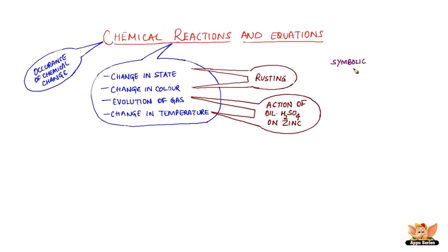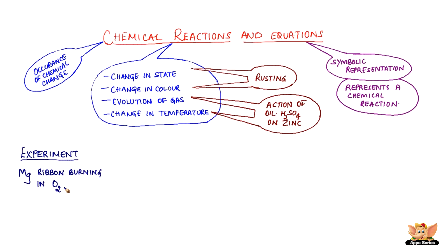Symbolic representation of a chemical reaction is called a chemical equation. In other words, any chemical equation represents a chemical reaction. An experiment of magnesium ribbon burning in oxygen can be written as magnesium and oxygen gives magnesium oxide.